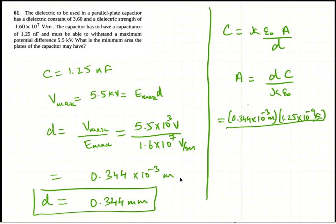And kappa is 3.6, let's fix this. 3.6 times epsilon naught is 8.85 times 10 to the minus 12.